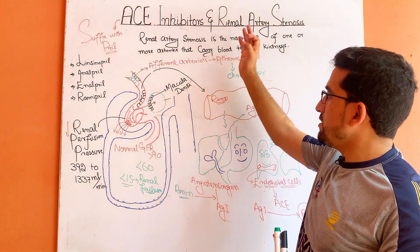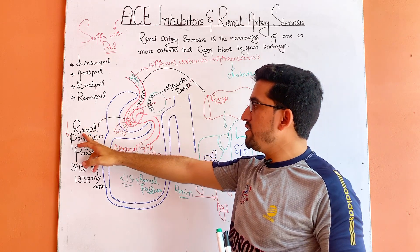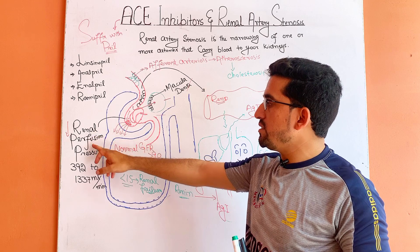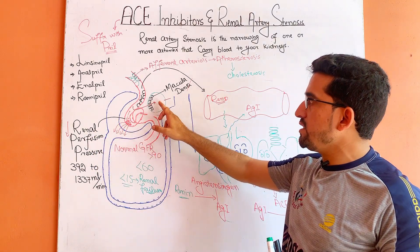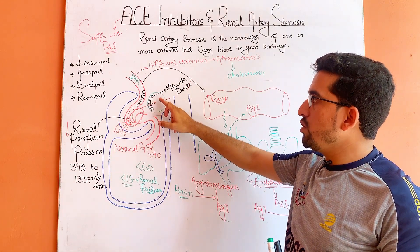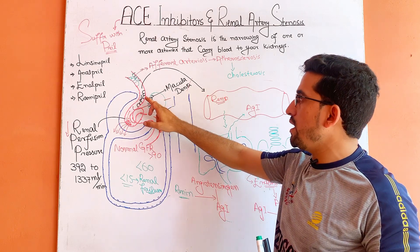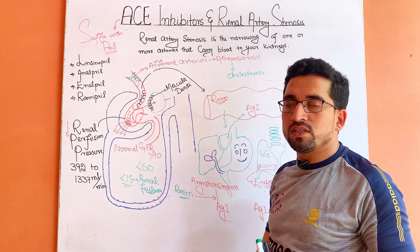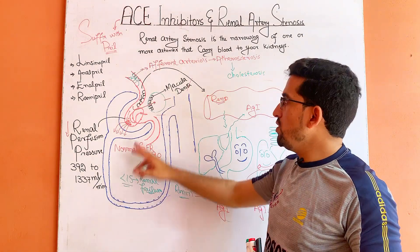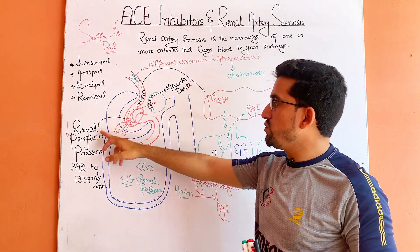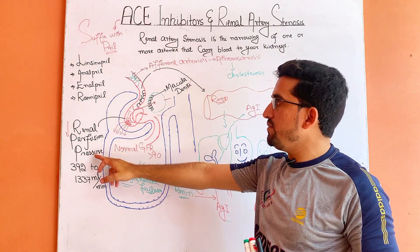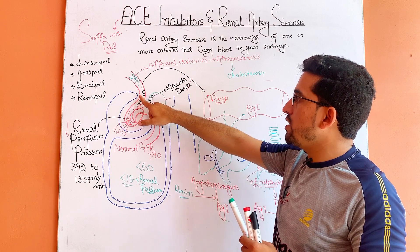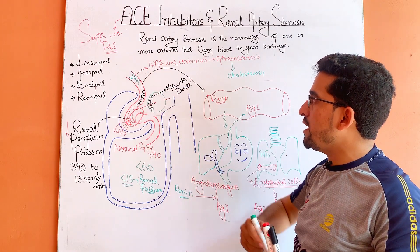In renal artery stenosis, when there is a decrease in renal perfusion pressure, this decrease is detected by the juxtaglomerular apparatus, which is normally present between the afferent arteriole and the distal convoluted tubule. When it is stimulated due to this decrease in renal perfusion pressure, it causes the release of renin from the granular cells of the afferent arterioles.